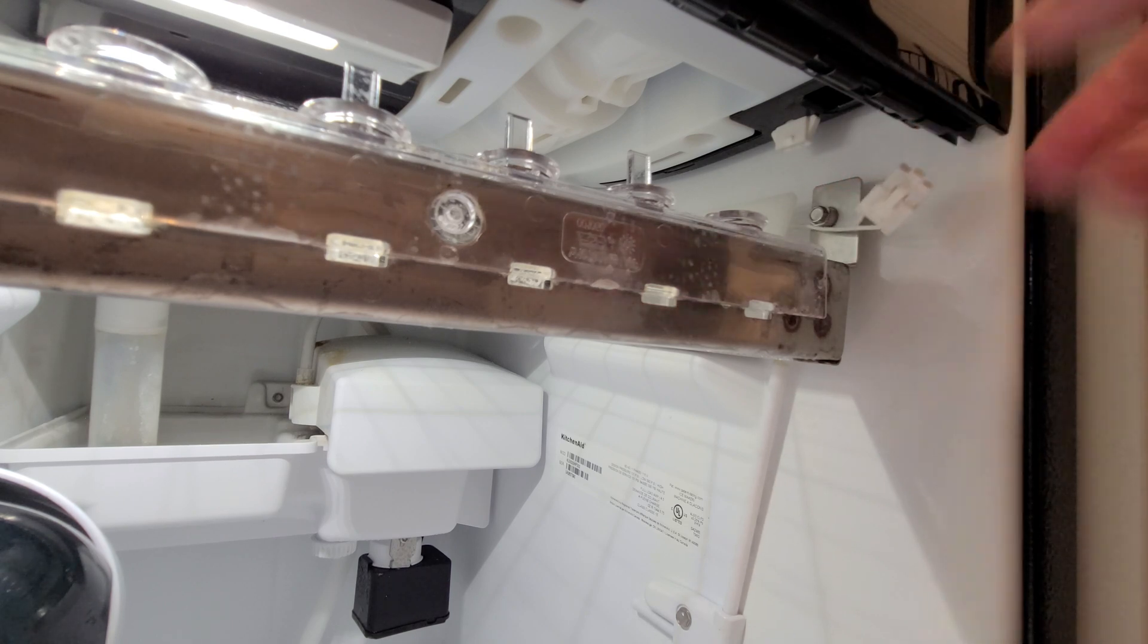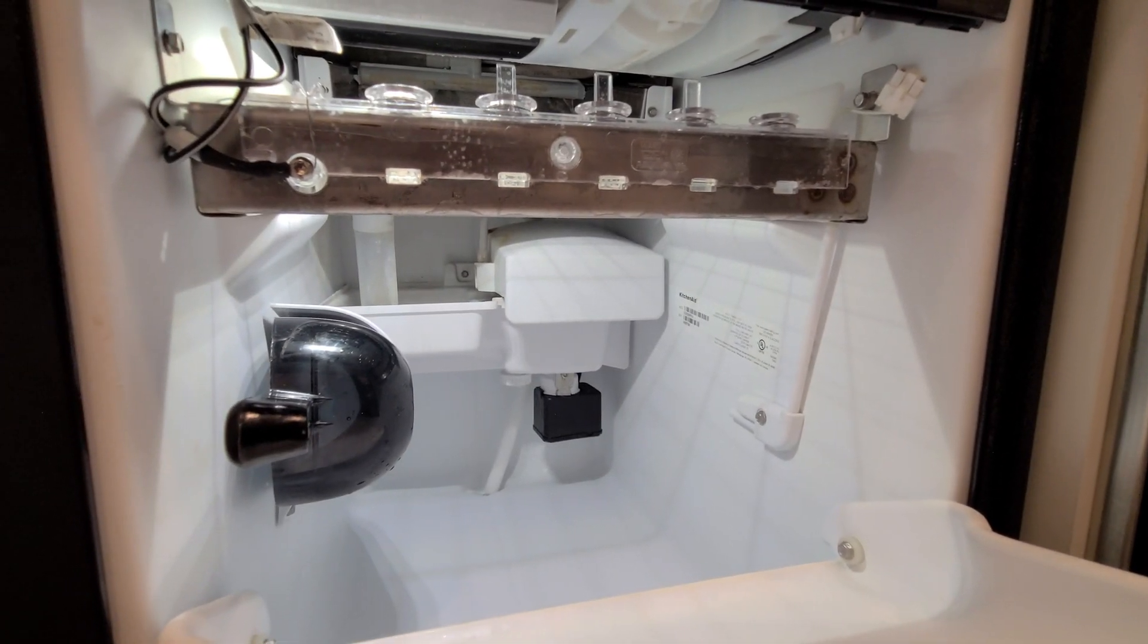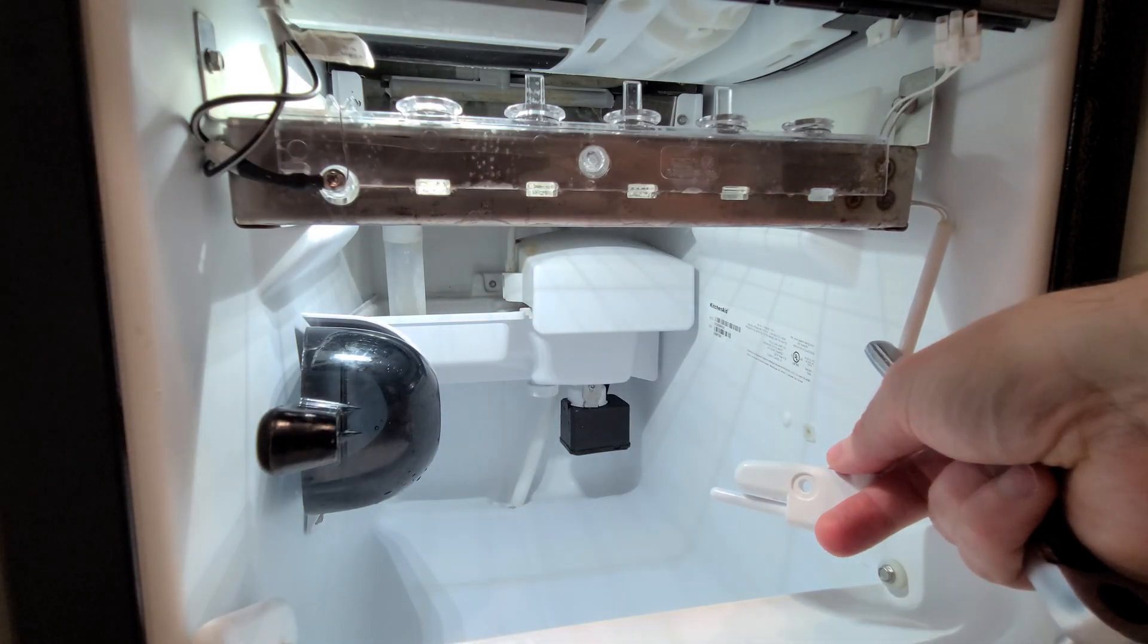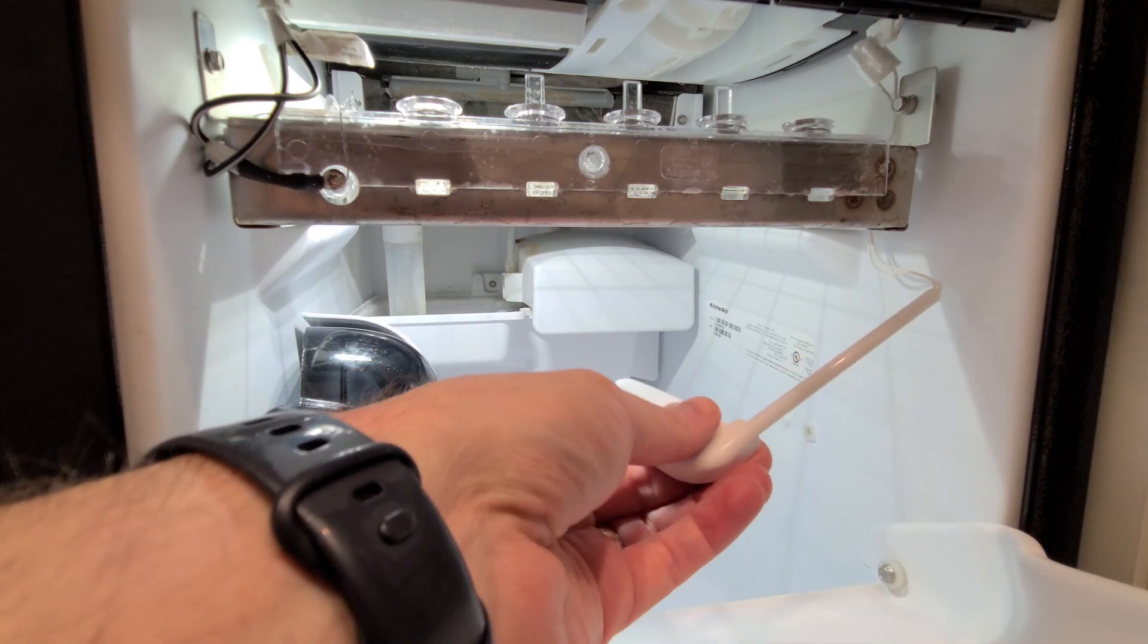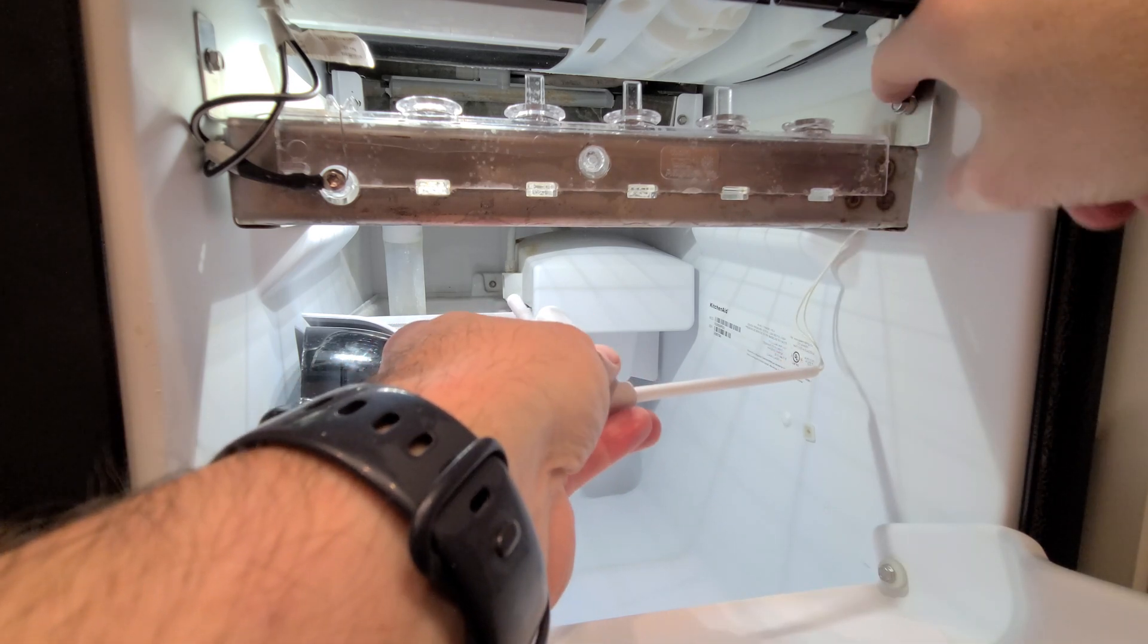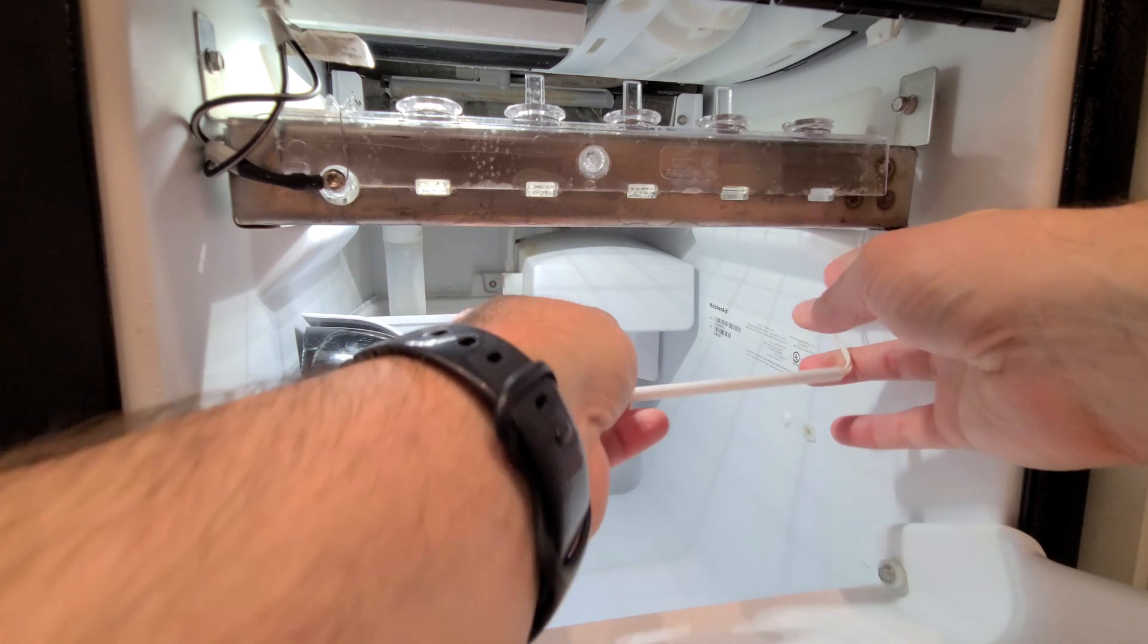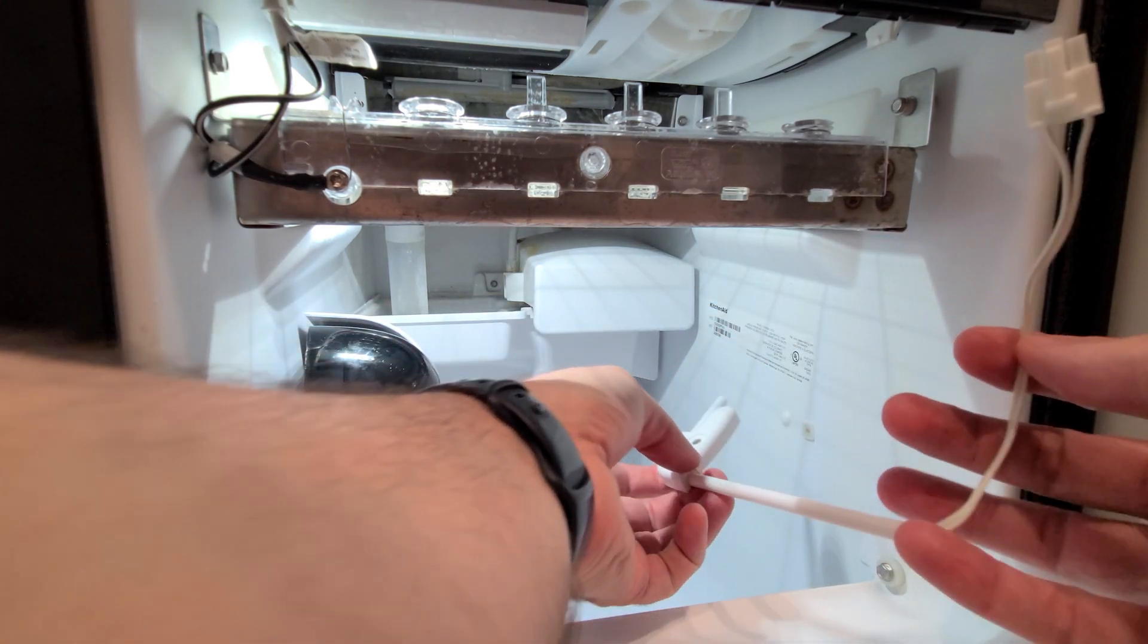The next thing that we need to do is unscrew it. Make sure that screw doesn't go down your drain. Turn this a little bit. That will come right out.